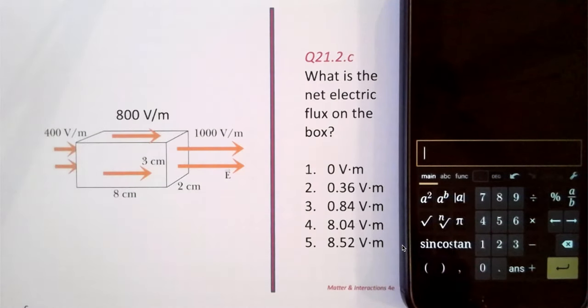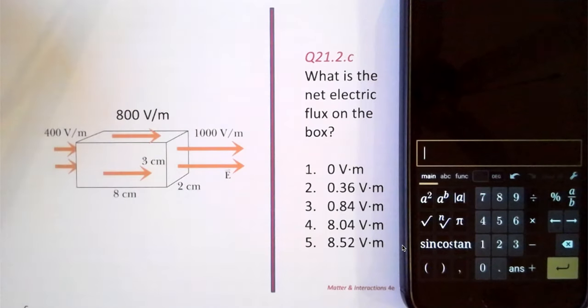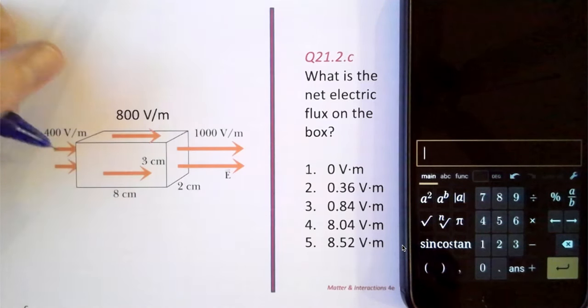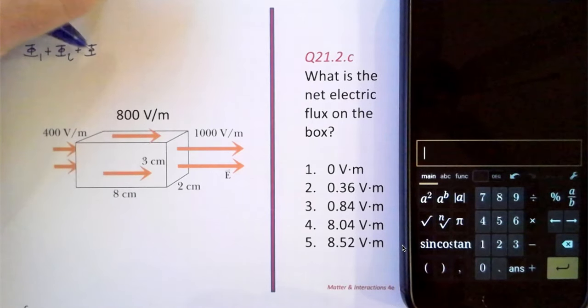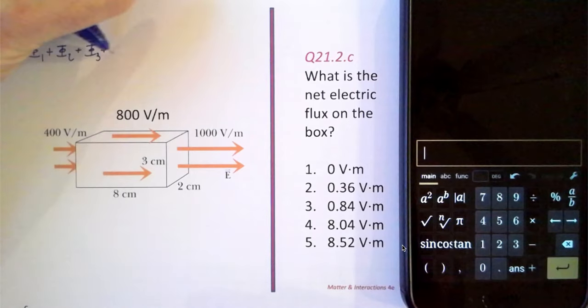It wants us to calculate the net electric flux for the entire box. So what we do is we calculate the electric flux for each face of the box and add them all together. So it's the flux for side 1 plus the flux for side 2 plus the flux for 3 and so on. And that's going to give us the net flux.